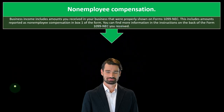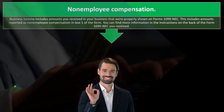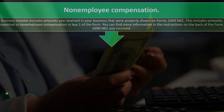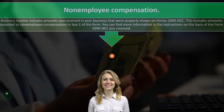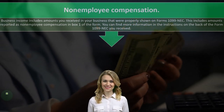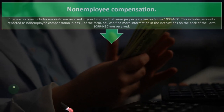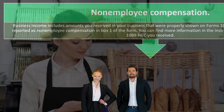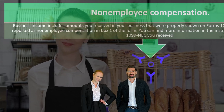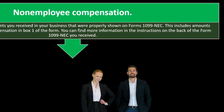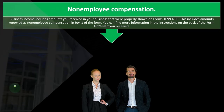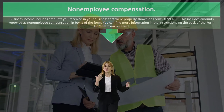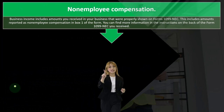Non-employee compensation: business income includes amounts you received in your business that were properly shown on Form 1099-NEC. This is an income tax system, meaning income is essentially taxable. The government has an incentive to get involved and make sure you're reporting your income. They have leverage on the payer of a transaction. Therefore, if you work for another business as a contractor or sole proprietor, that business will likely send you not a W-2 but a 1099 — most likely a 1099-NEC.